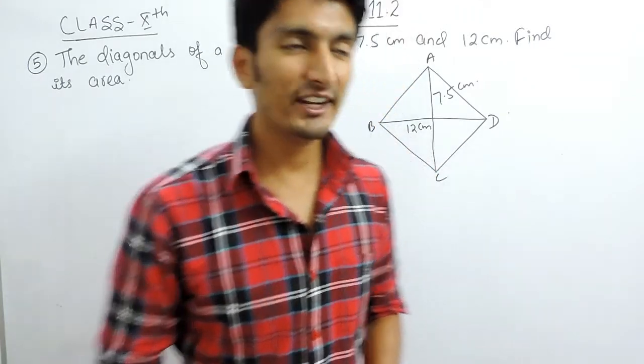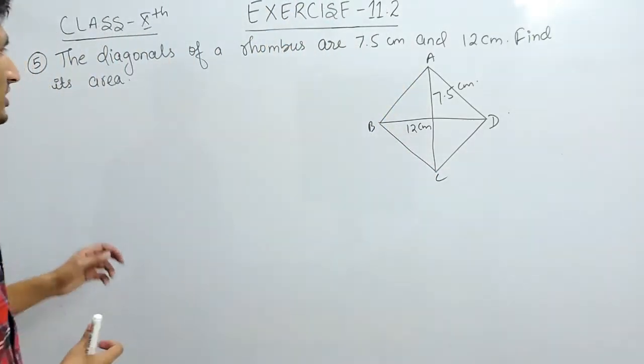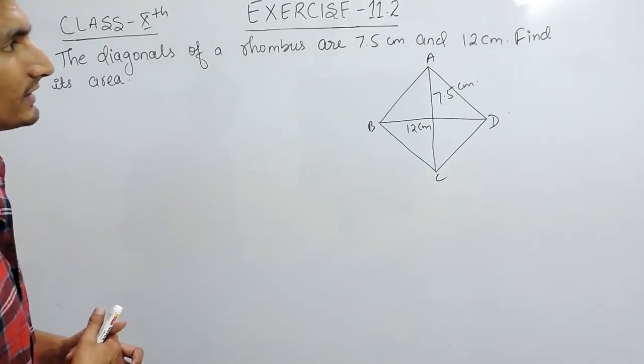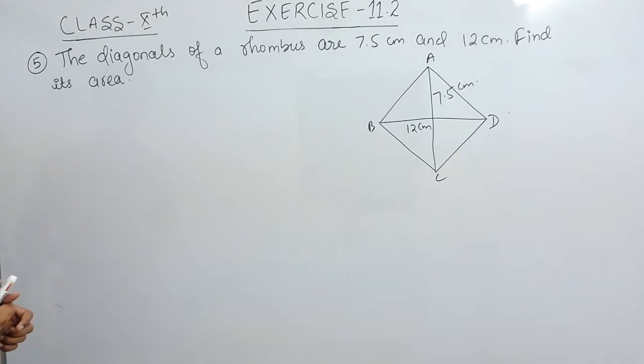Hello everyone, in this video we are going to solve question number 5, exercise 11.2. The question says the diagonals of a rhombus are 7.5 cm and 12 cm. Find its area.